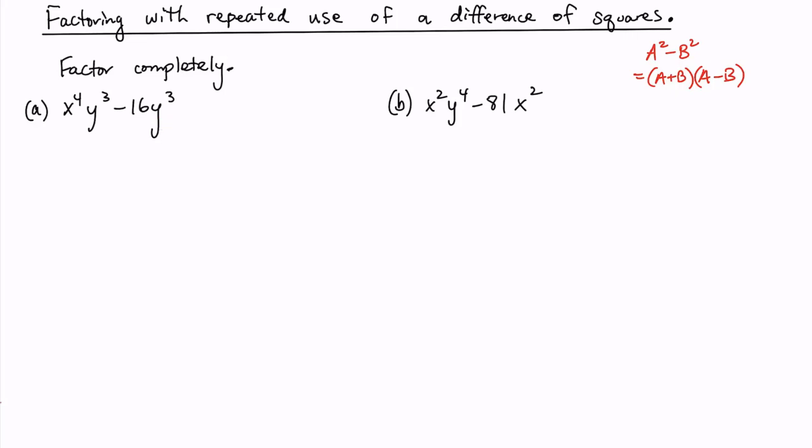Let's take the GCF y to the third and then use the distributive property. And when we do the distributive property, what would we have left? We would have x to the fourth minus 16.